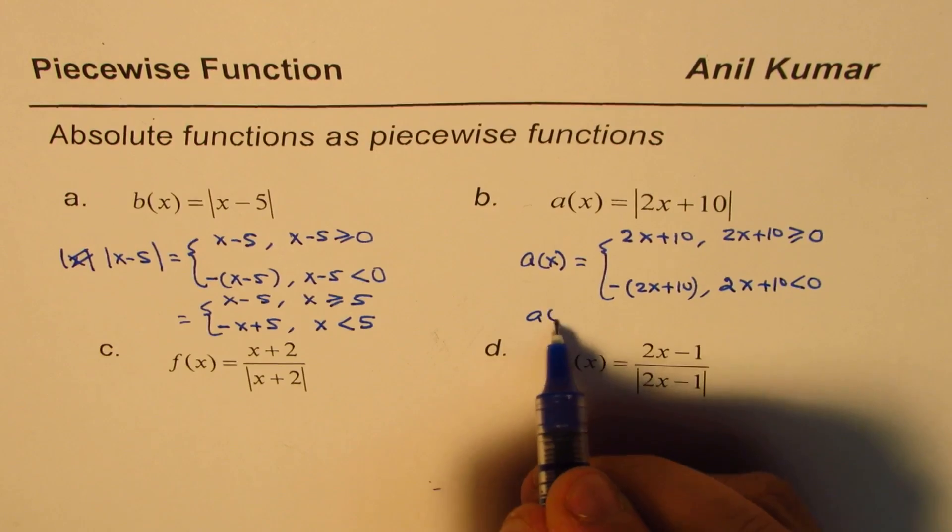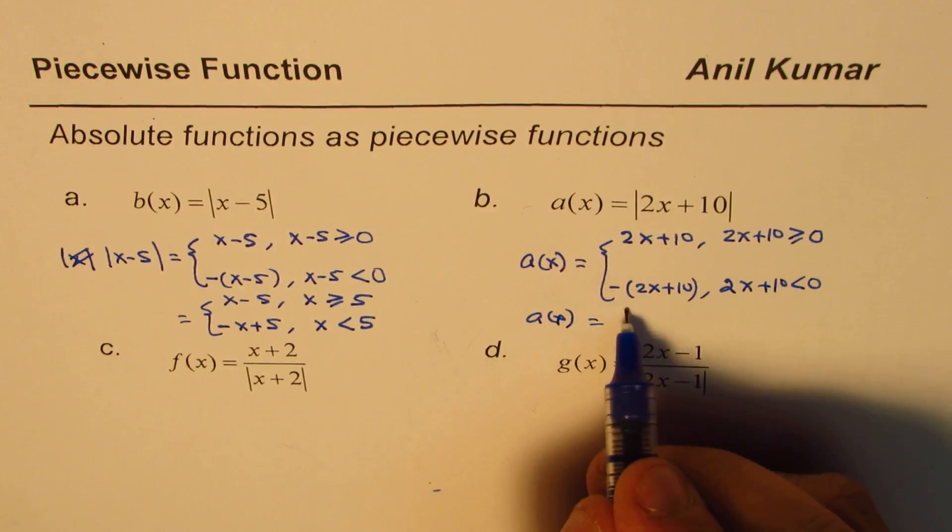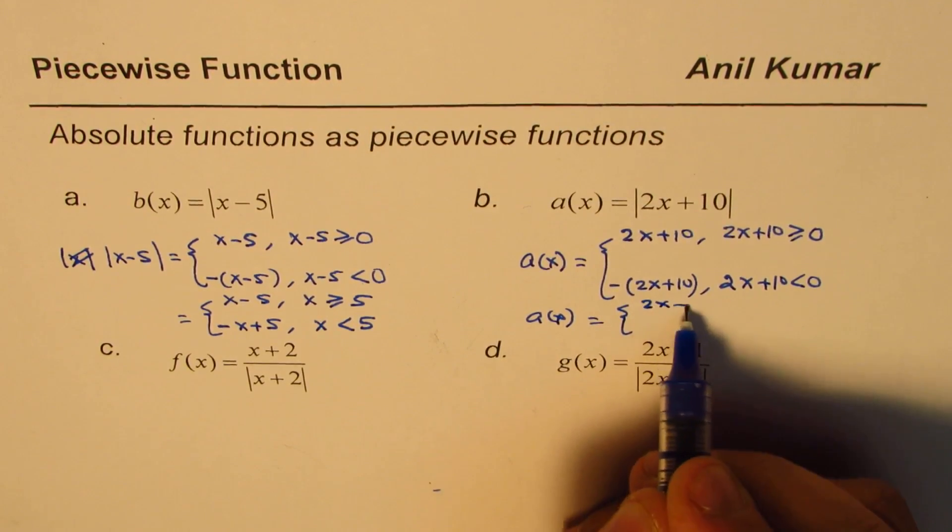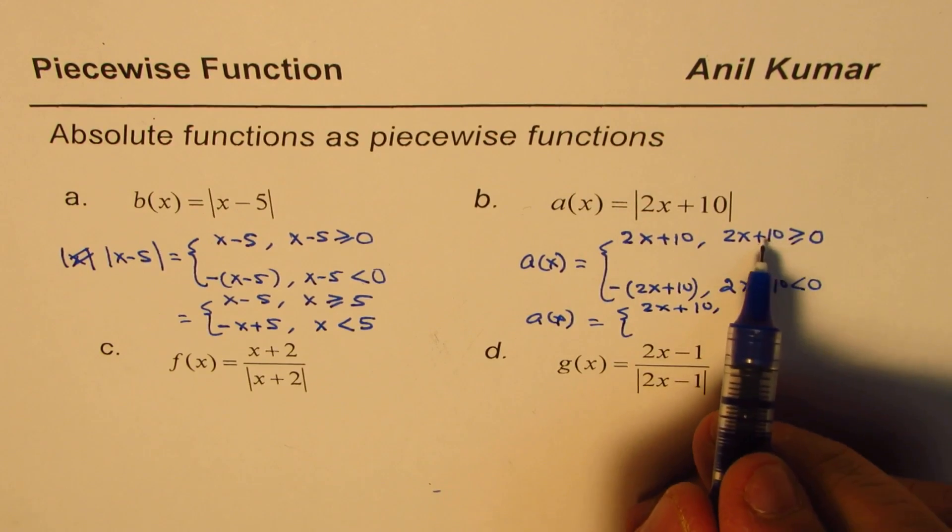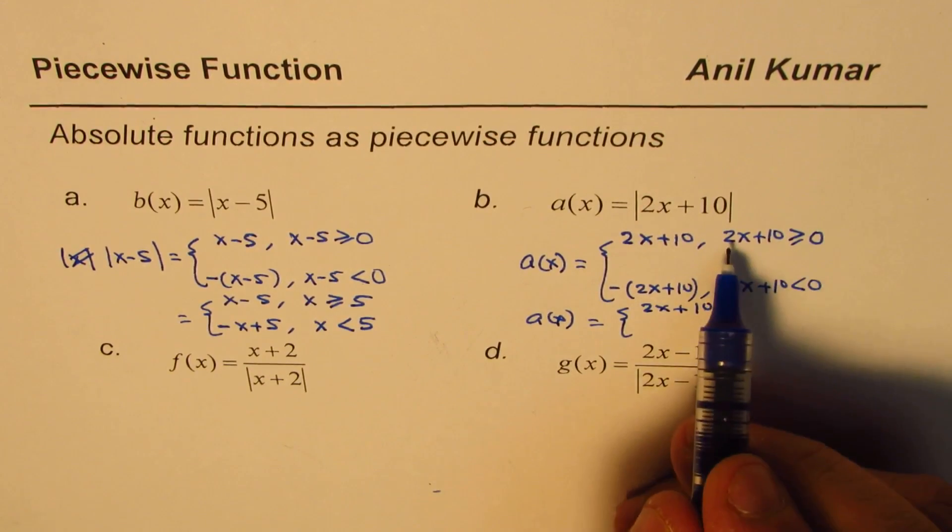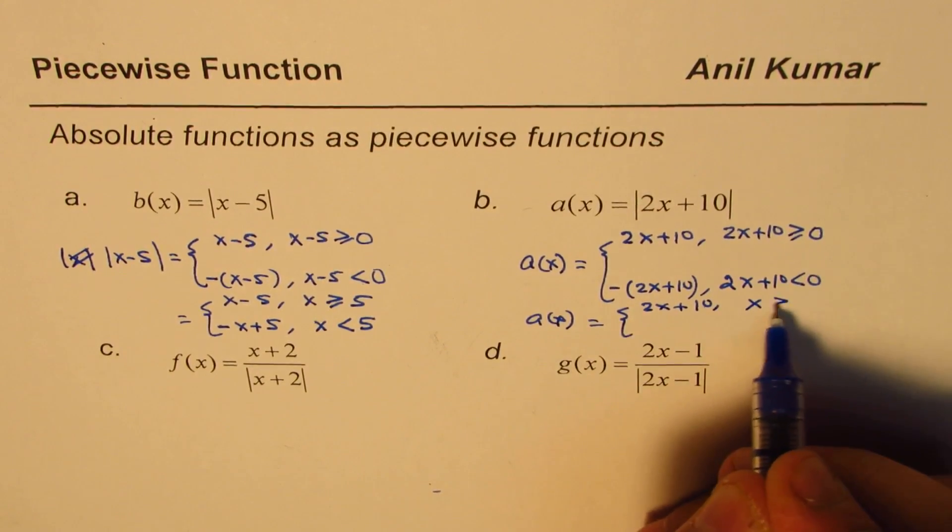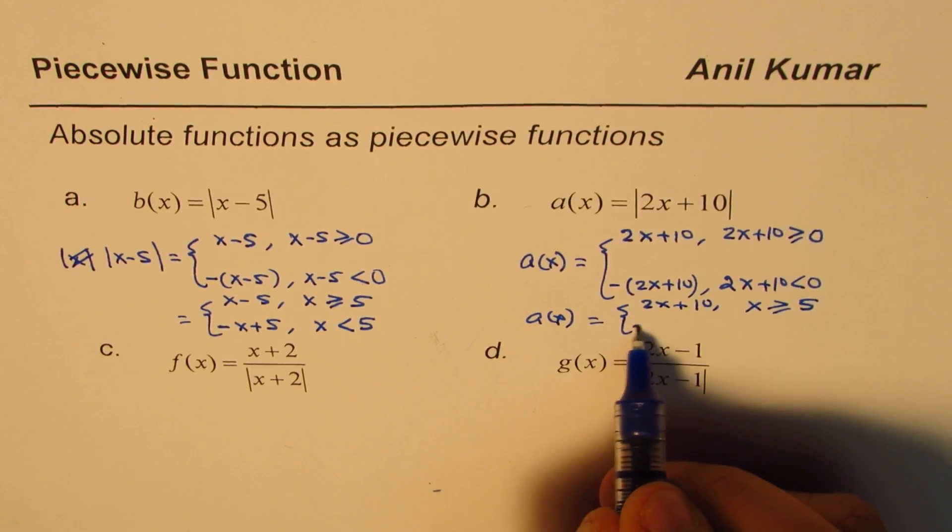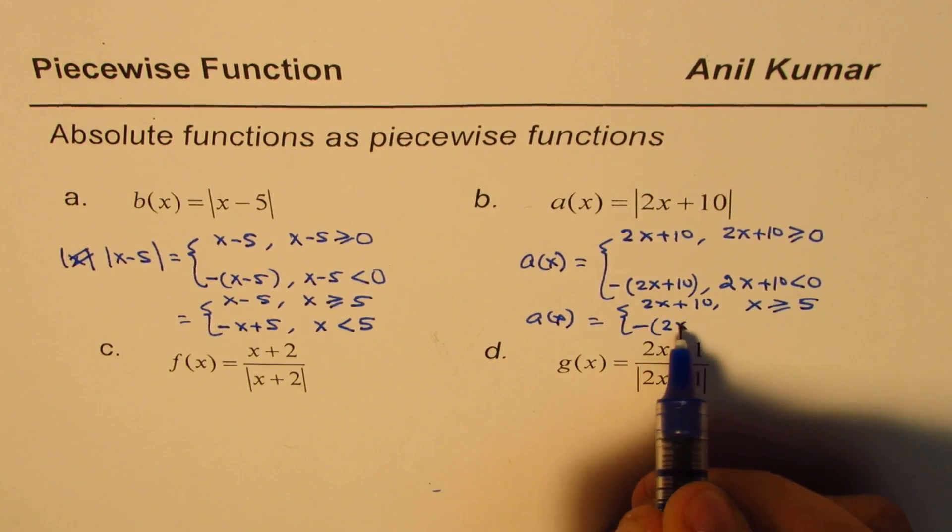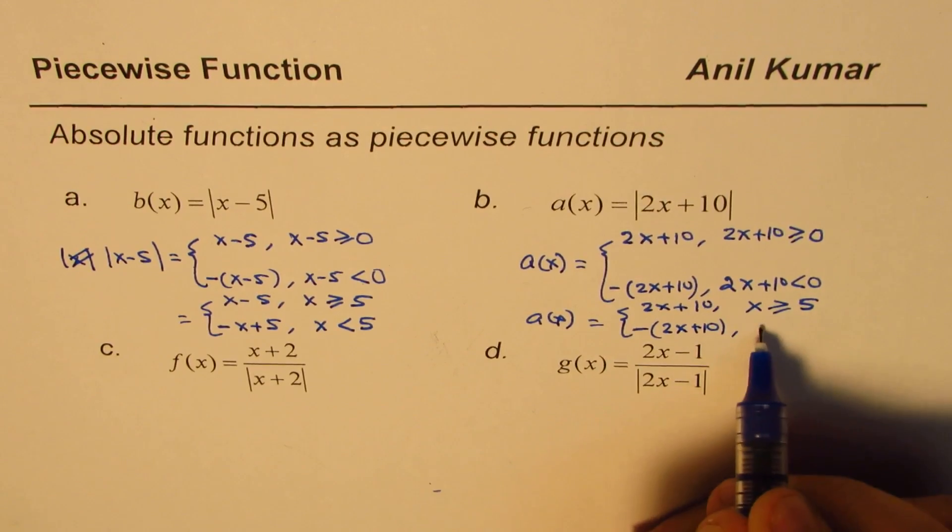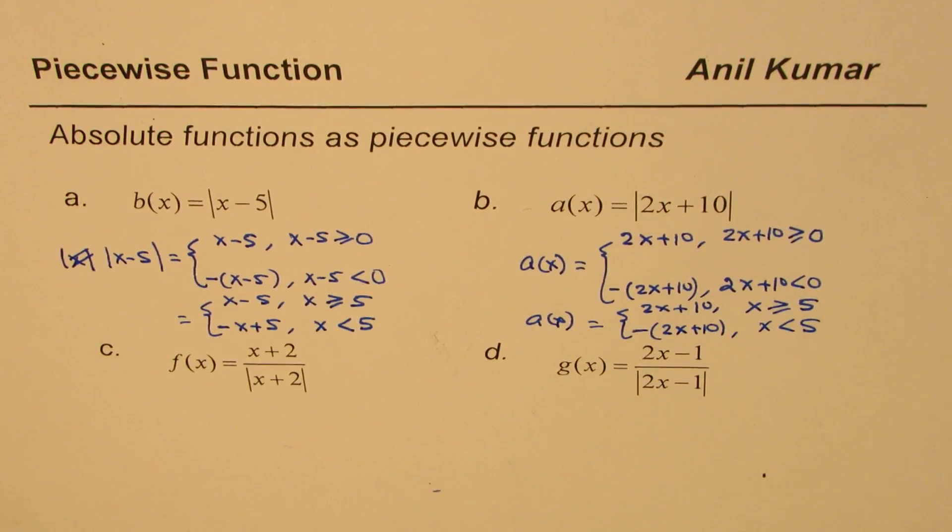Now we could write this as a(x) equals to 2x plus 10 when x is greater than equal to -5. On the other hand minus of 2x plus 10 when x is less than -5. So that is how you are going to define it.